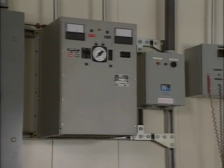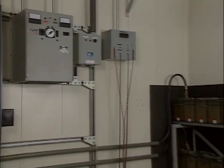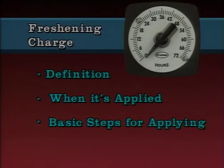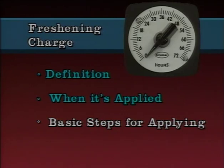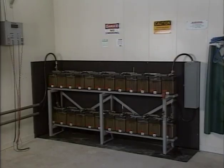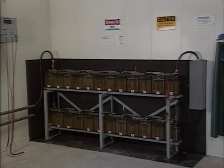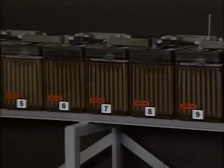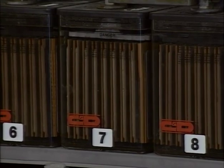One of the main functions of a battery charger is to charge a battery or a cell, but there are different types of charges that can be given a battery. This part of the program will address a type of charge called a freshening charge. A freshening charge is a charge given to new, wet-charged cells before they're put into service. Wet-charged cells are new cells shipped from a manufacturer already filled with electrolyte and fully charged. Although wet-charged cells are fully charged when they leave the factory, they will gradually self-discharge until connected to a source of voltage higher than their open-circuit voltage.